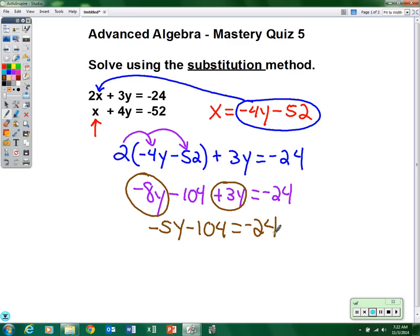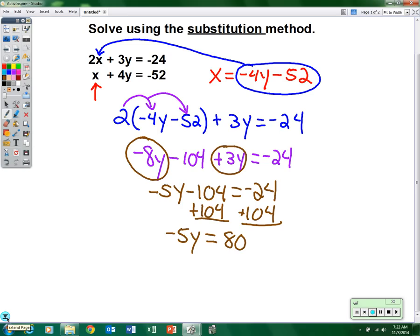Now solve for y. So we're going to add 104 to both sides. So now negative 5y equals 80. Negative 24 plus 104 is 80. Divide by negative 5. So we get y equals negative 16. 80 divided by negative 5 is negative 16.